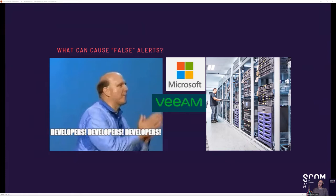And also the software companies are a bit trigger happy — for example, Microsoft. In the setup you have out of the box, most management packs are quite trigger happy, and they give an alert when they shouldn't. The levels are set too high or too low. For example, we've adjusted the alert for DNS lookups a couple of times on the DNS management pack because the thresholds are quite low.